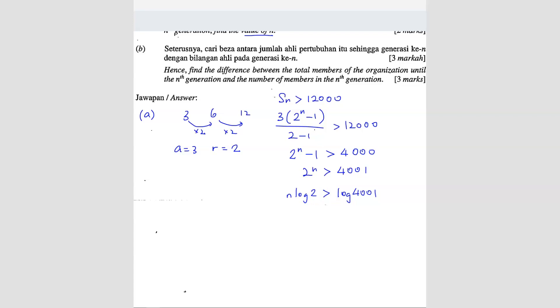So n more than log 4,001 over log two. So n is more than 11.97. So n is approximately 12.